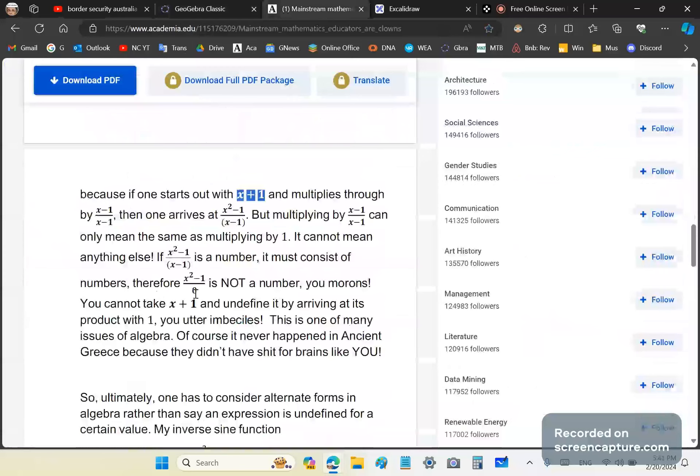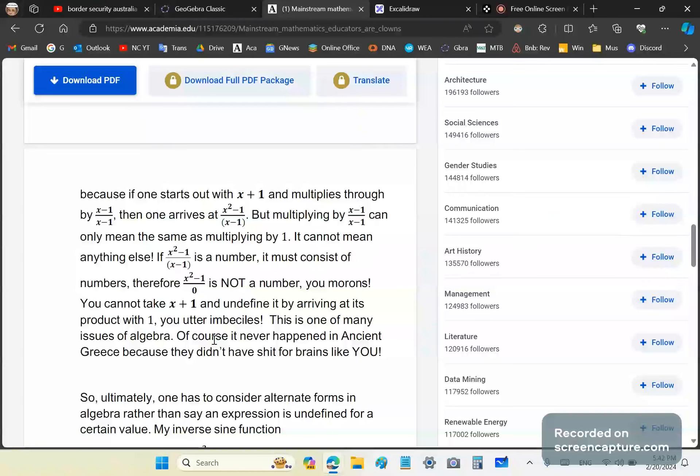Therefore, x squared minus one over zero is not a number, you morons. Do you understand that? You cannot put zero in there. And if you say x cannot be one, you are saying that you cannot put zero in there, but you still have a problem. You're saying that it's not defined there. But it is - x plus one is what happens when you cancel out these factors. So morons and idiots like Professor Jack Heisinger don't understand these things. So what you're doing is you're undefining it and arriving at its product with one. How stupid are you? When you multiply an expression by one, it doesn't change the expression.